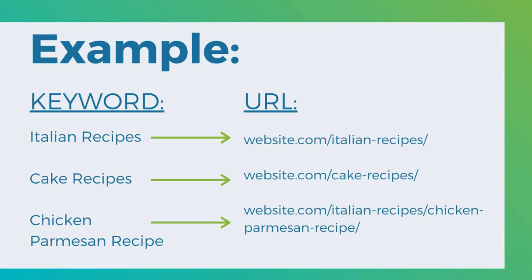To continue with the example, you're taking a keyword like Italian recipes. So you have your website.com/Italian-recipes — you know this page is optimized for that keyword. When people type it into Google, hopefully you rank high. For cake recipes, it's a completely separate URL. And for chicken parmesan recipe, which falls under Italian recipes, you'd have website.com/Italian-recipes/chicken-parmesan-recipe, so you know exactly which page is trying to rank for that keyword.